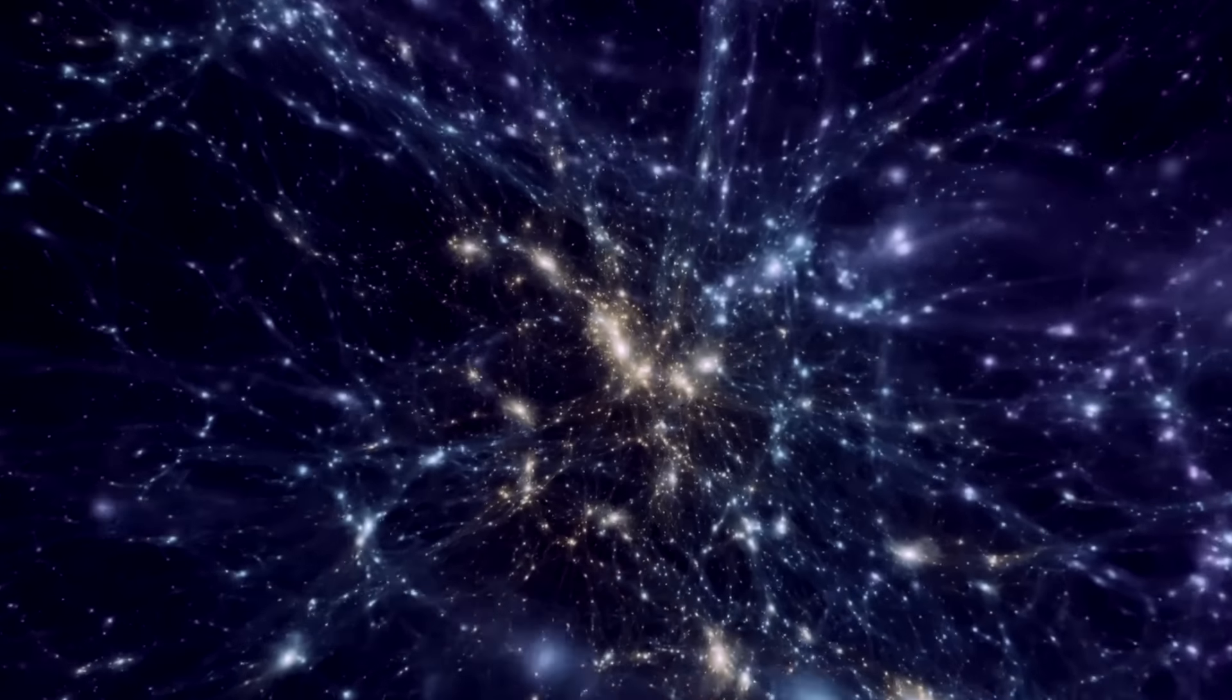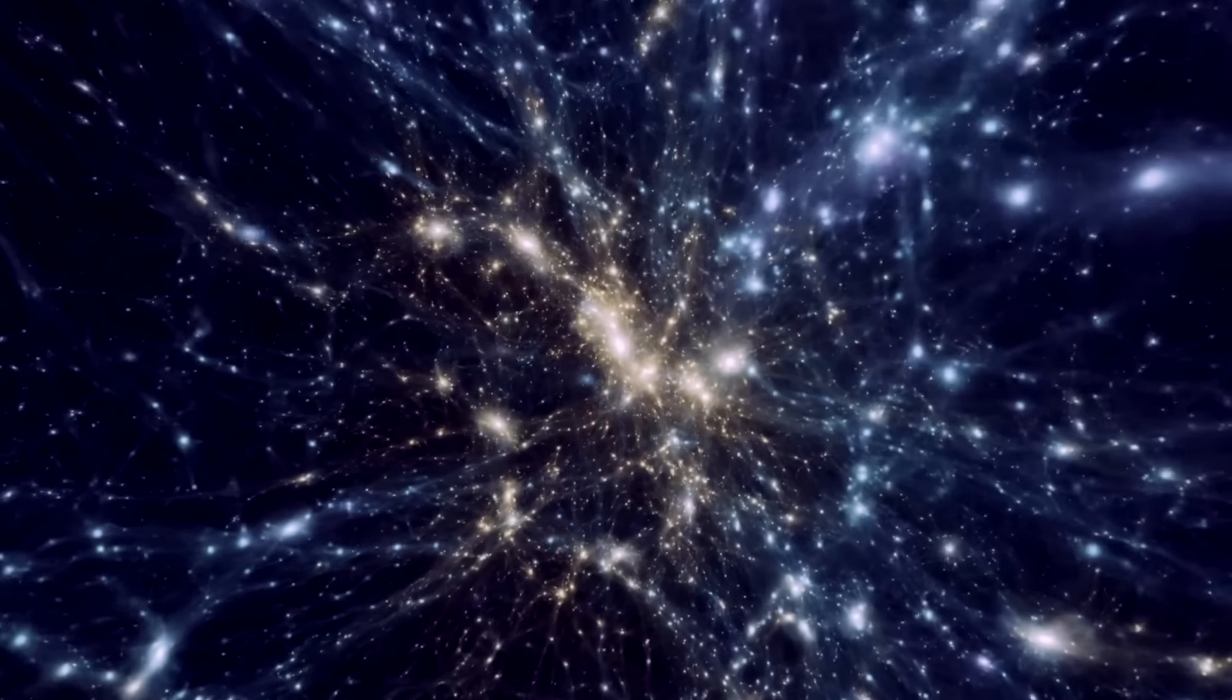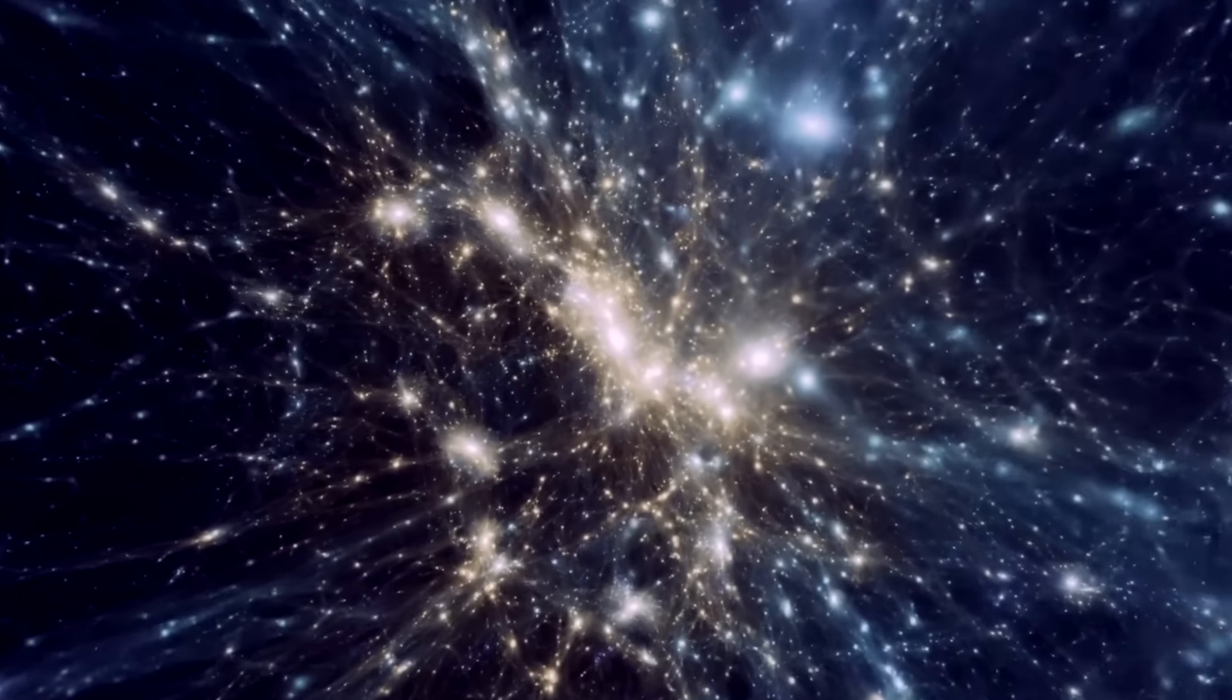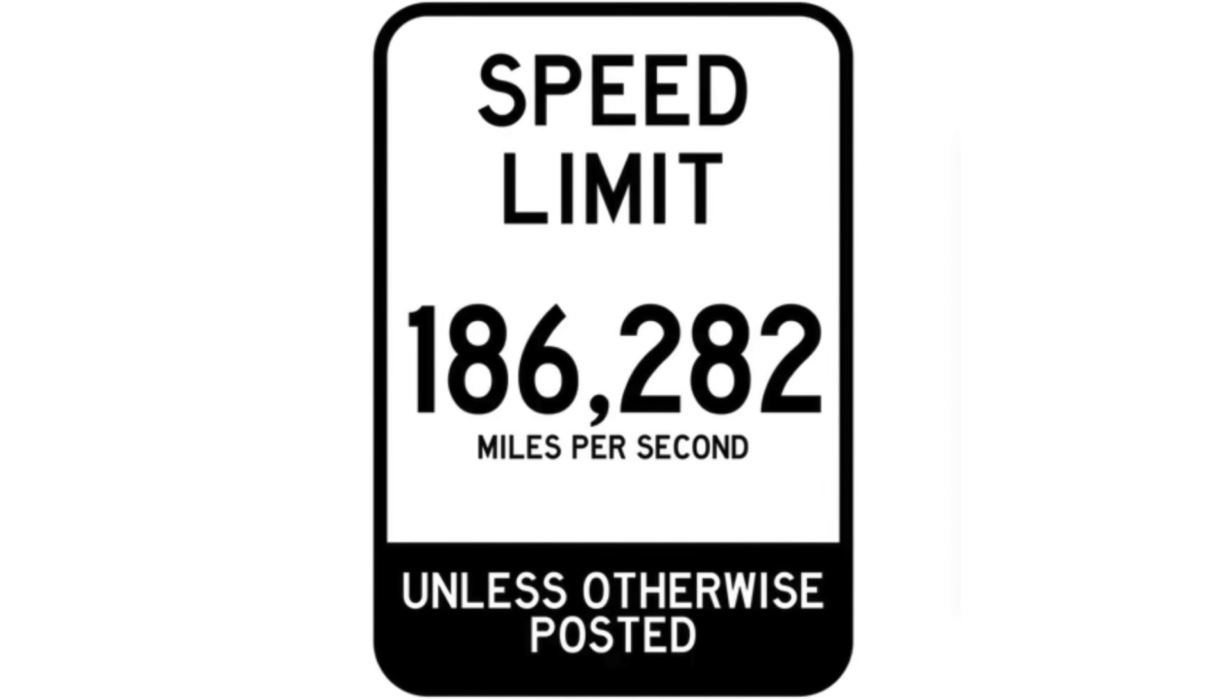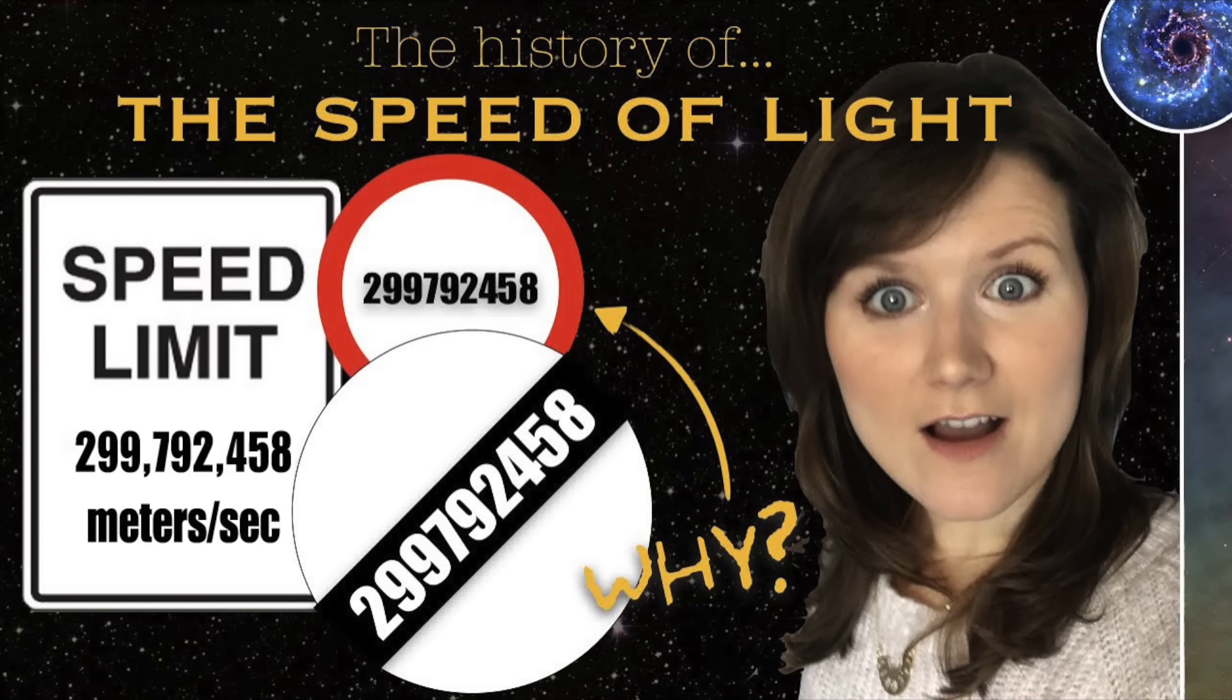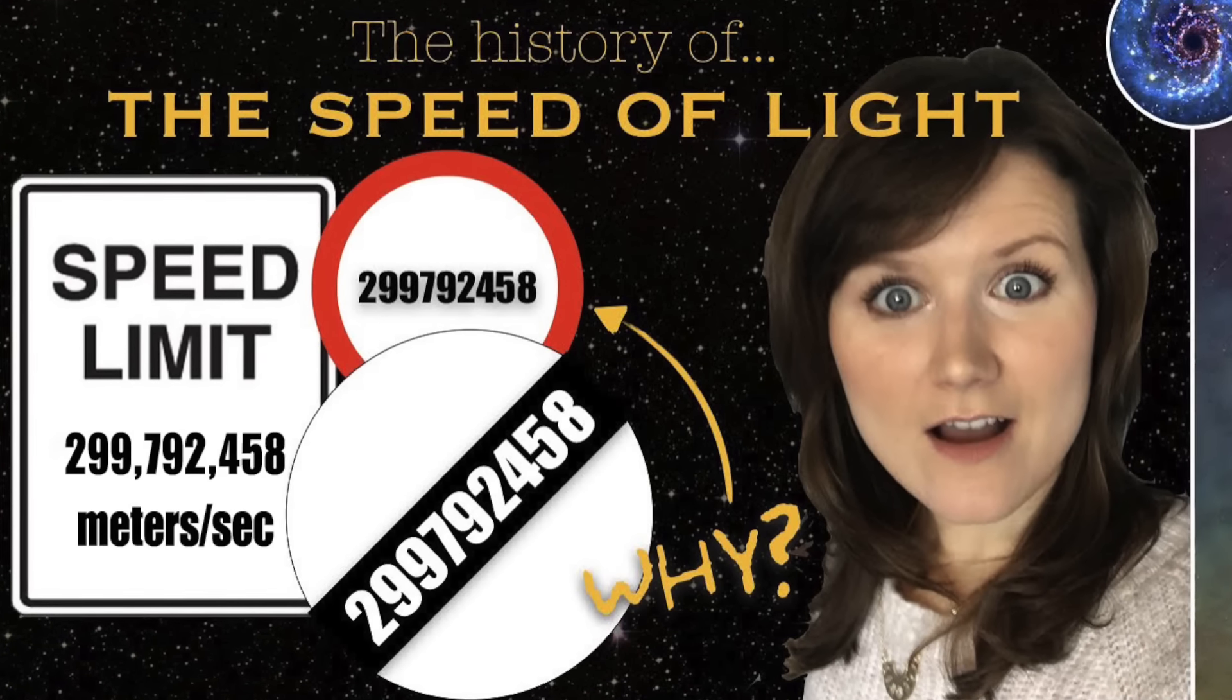One of the biggest problems the so-called experts always have with the Electric Universe model of cosmology is we don't buy into the idea of a cosmic speed limit. In fact, our model requires faster than light travel. There's plenty of evidence to prove this, but the funniest part is the standard model requires it too. They just don't know it.